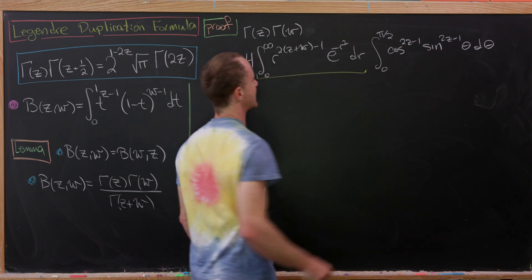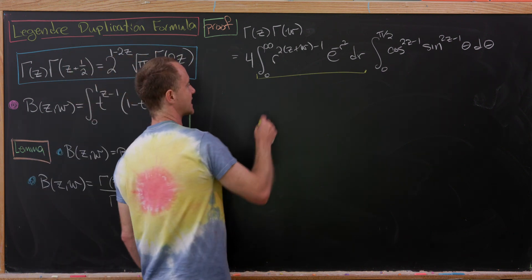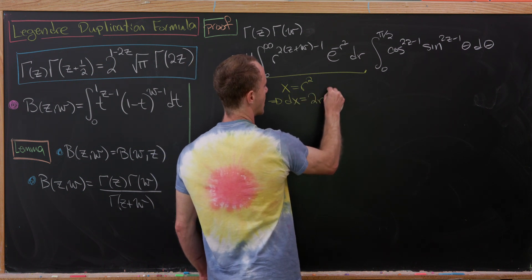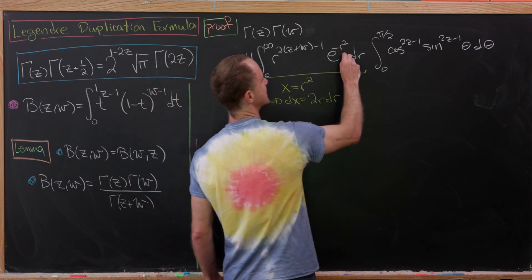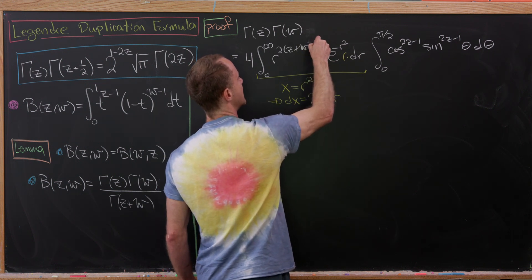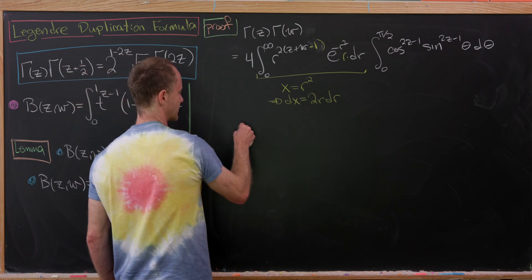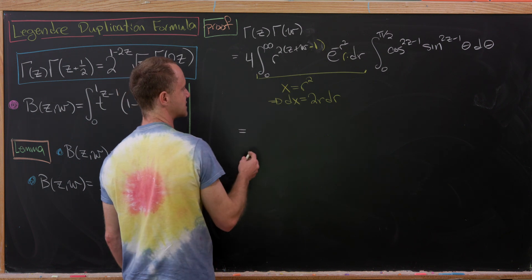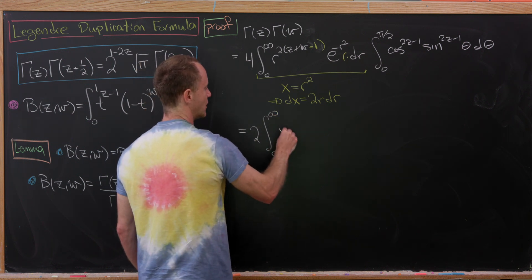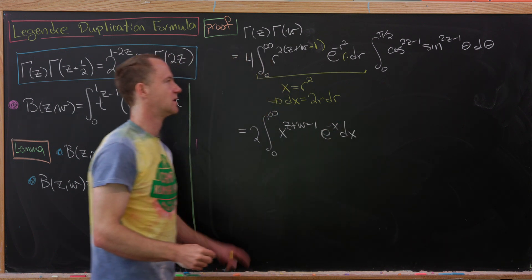For the radial integral, we make the change of variables x = r². Then dx = 2r dr. Writing the exponent as (z+w-1) and combining with the 4 out front, the 2 from dx cancels one factor of 2, leaving us 2 times the integral from 0 to infinity of x^(z+w-1) e^(-x) dx.